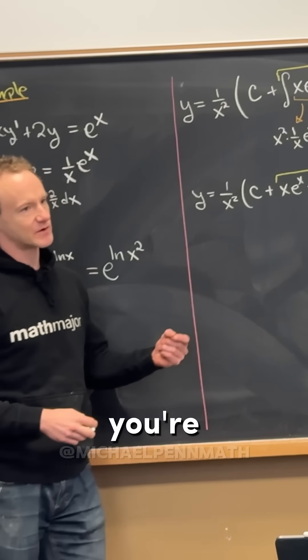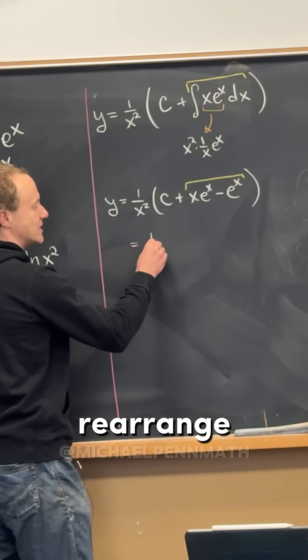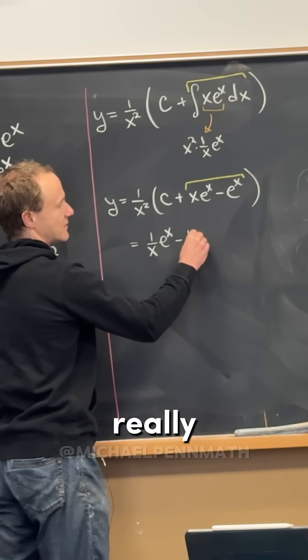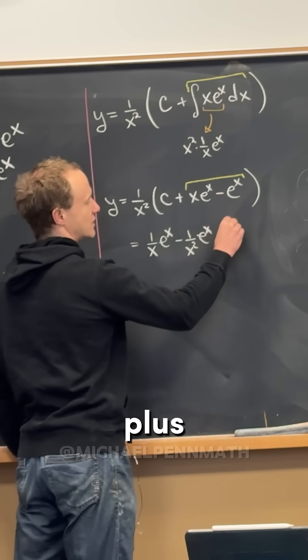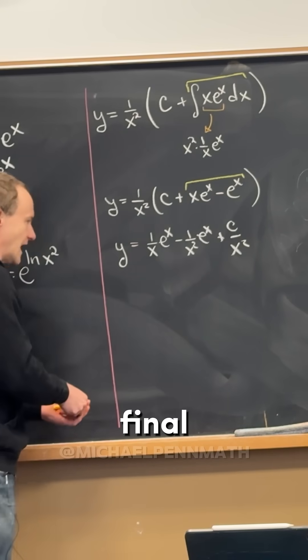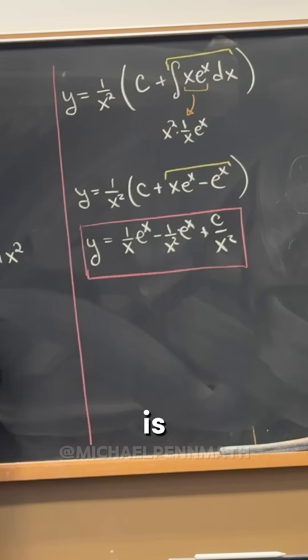And then, if you're psyched, you can multiply it through by the 1 over x squared and then rearrange. I would probably do that, but it doesn't really matter. So then plus a constant over x squared. And there we've got our final, most general solution.